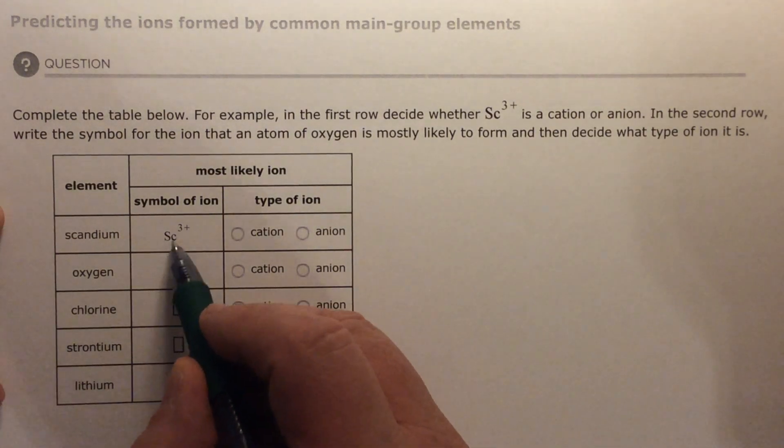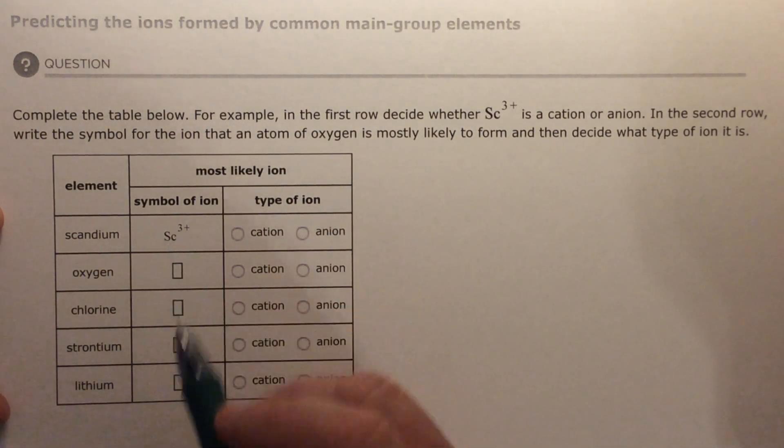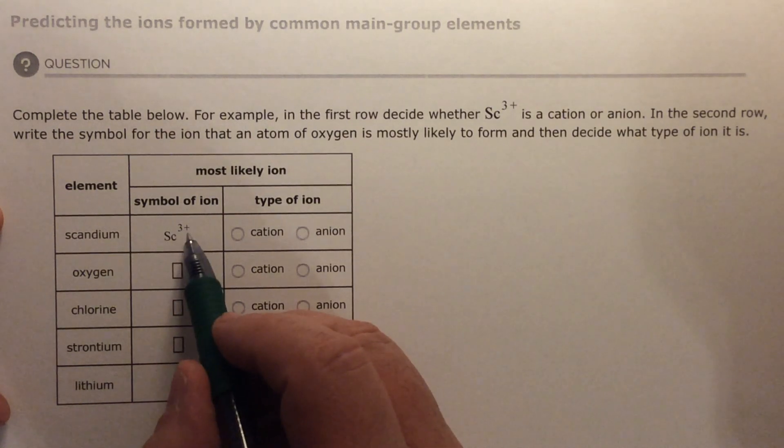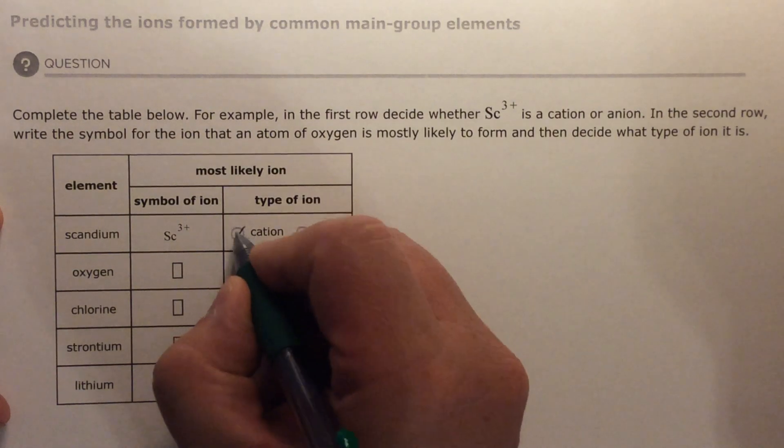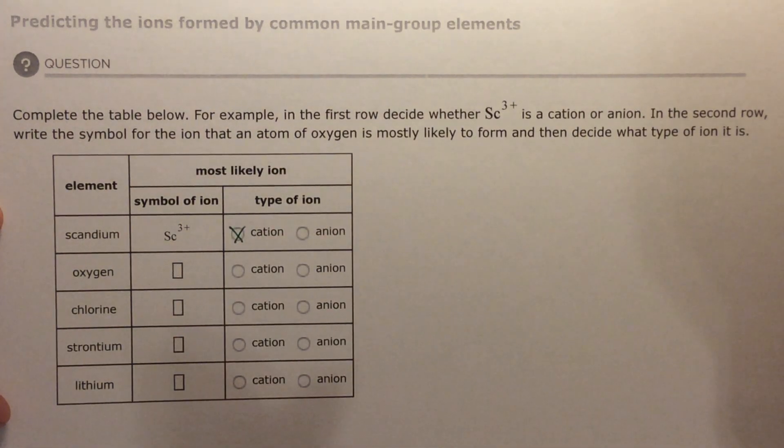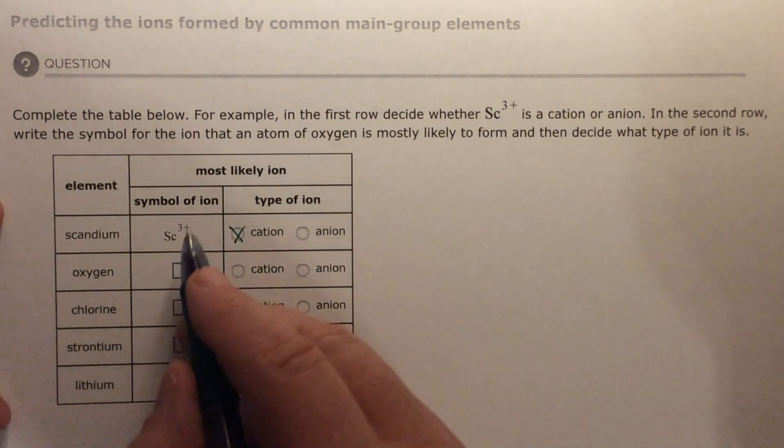So it will do that. And so scandium, the symbol is scandium three plus, Sc³⁺. It's one of the choices. There's actually more, but scandium three plus is positive. So therefore it is a cation. They did this one for us.